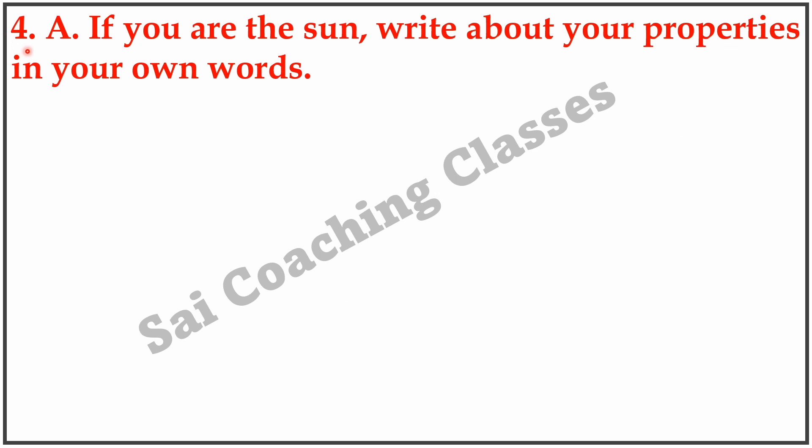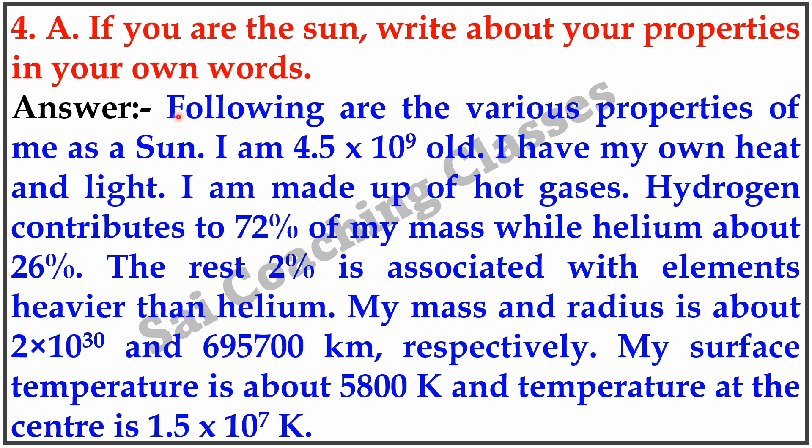Question 4. A. If you are the sun, write about your properties in your own words. Answer: Following are the various properties of me as a sun. I am 4.5 times 10 raised to 9 years old. I have my own heat and light. I am made up of hot gases. Hydrogen contributes to 72% of my mass while helium is about 26%.